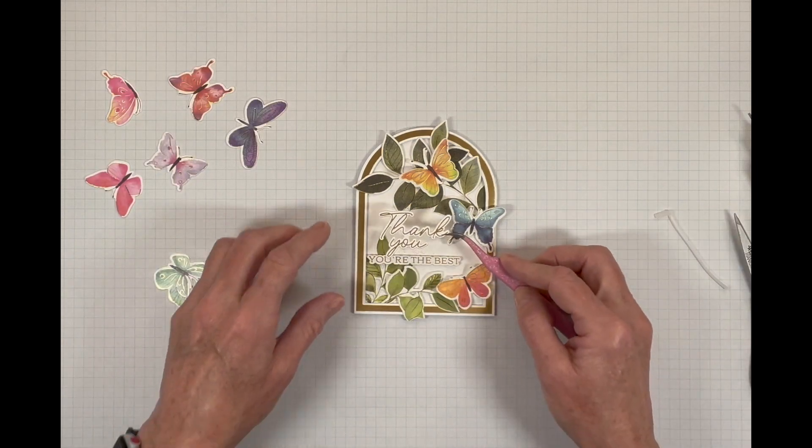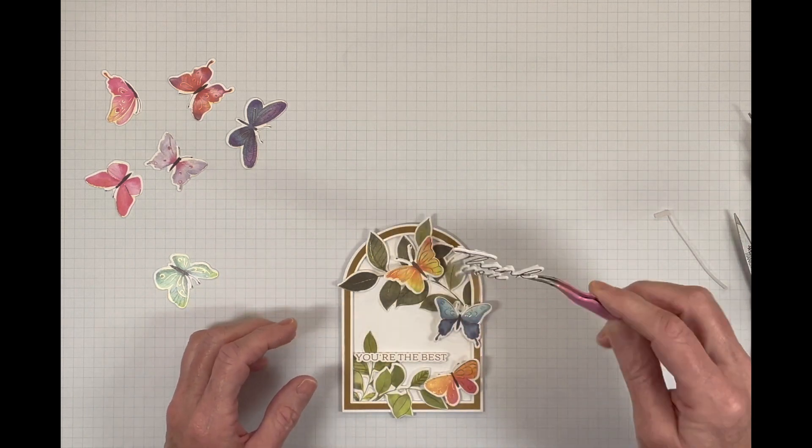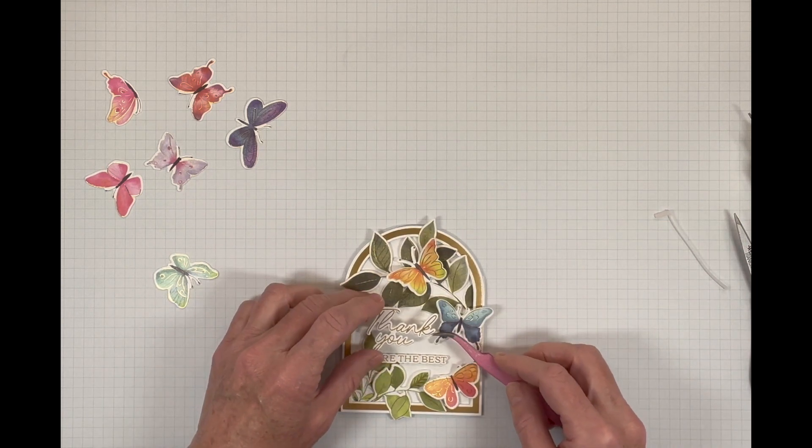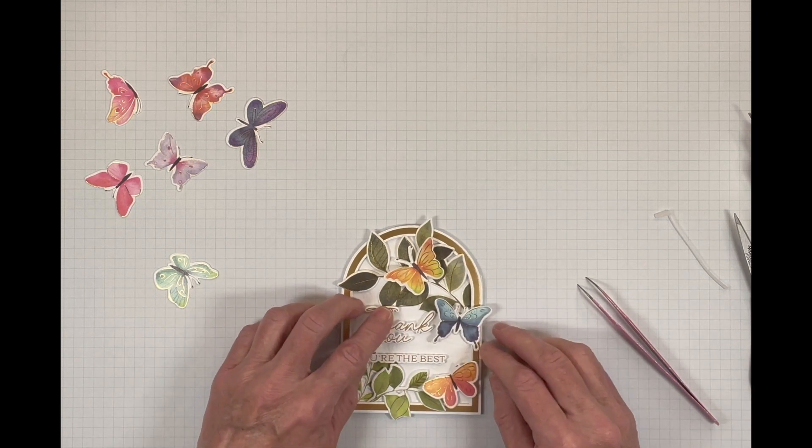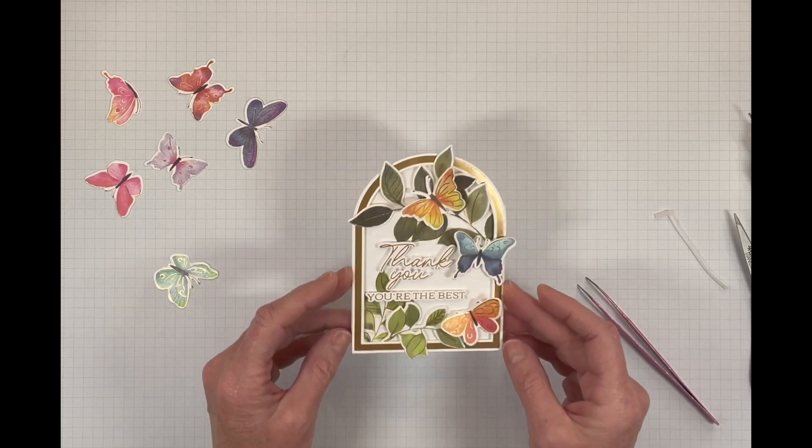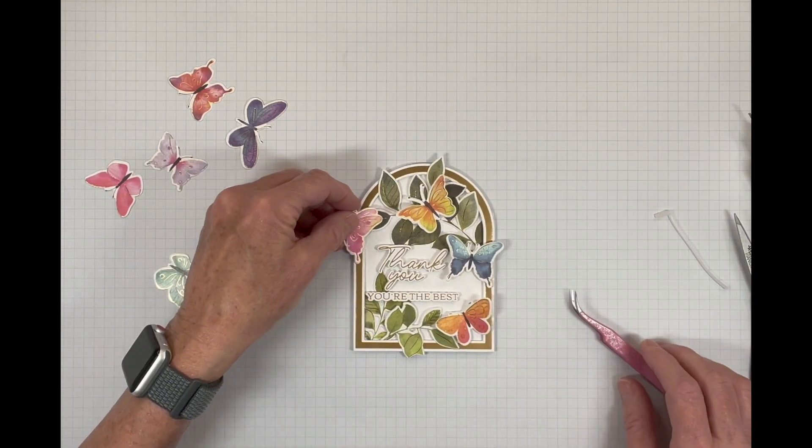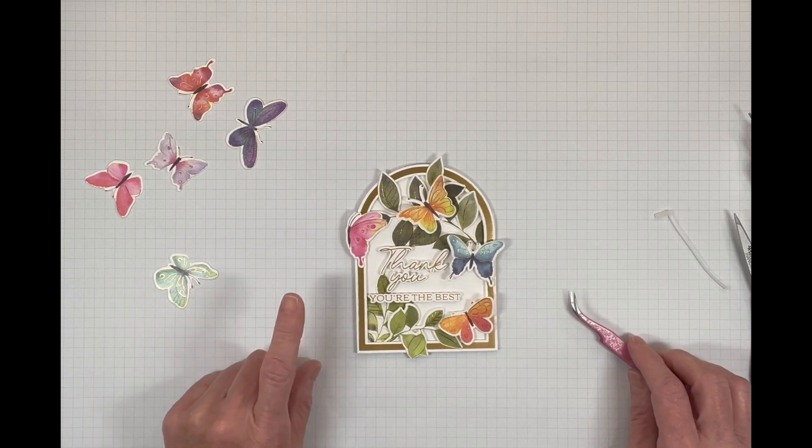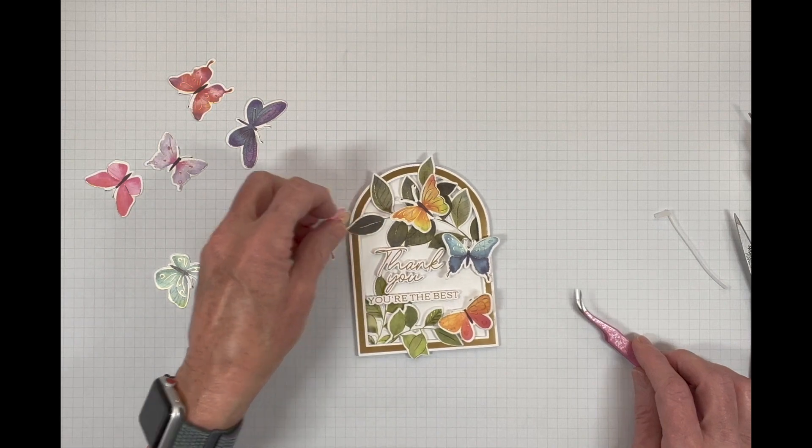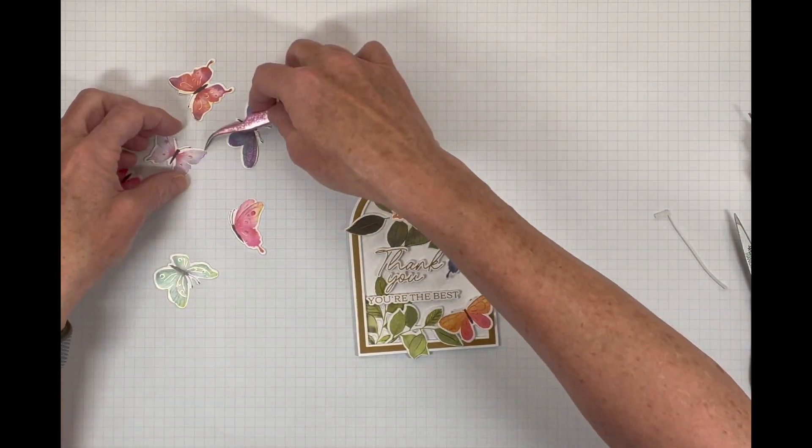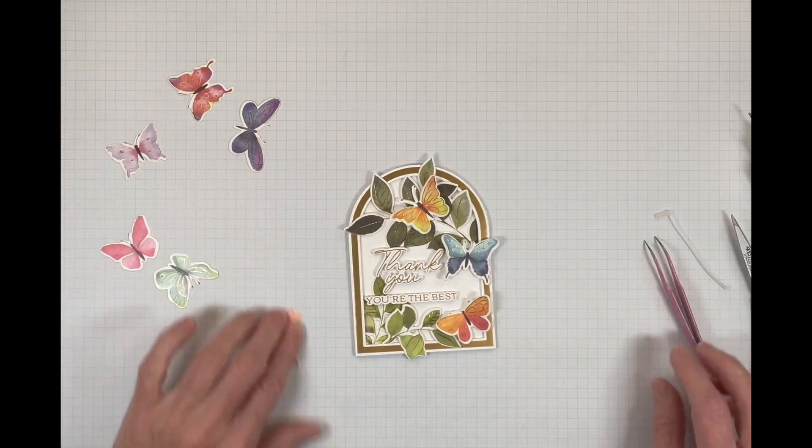Now we can get our sentiment on there and we're just going to look and see. I already took the release paper off the back and we're just going to kind of look and nudge that right in there. We need to add one more butterfly up here. And I think the best idea for here is this guy only because it's a half butterfly and I don't want to put a full butterfly and then have it stick off too much. So let's do that.